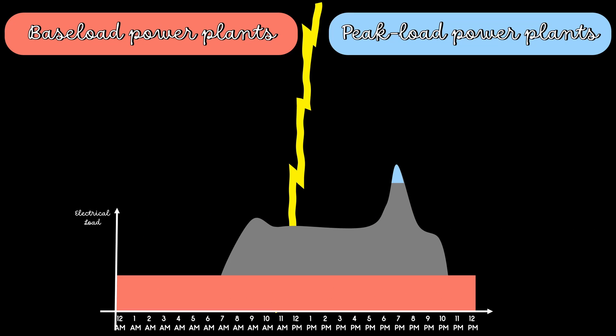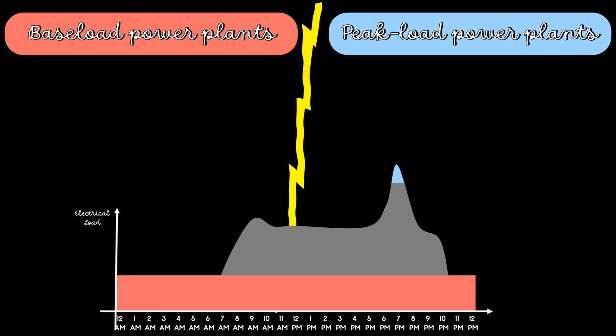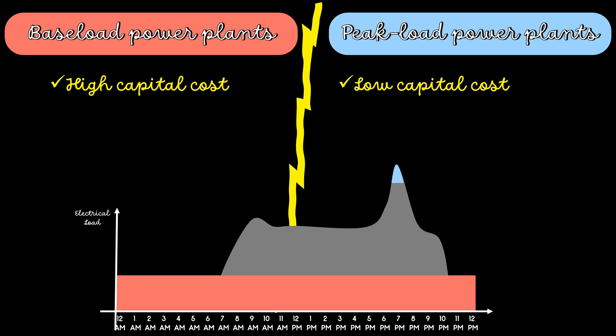Peak load power plants are generally less efficient than base load power plants. Base load power plants are usually large-scale power plants; therefore, the capital cost is high.